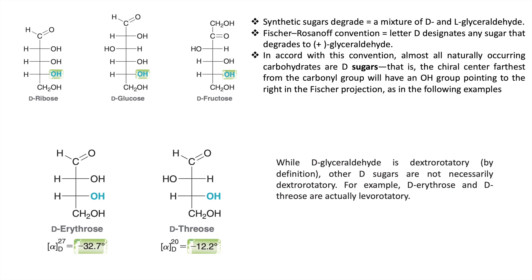D-fructose follows the same rule. Importantly, 'D' here is just a naming convention — it does not indicate the direction of rotation of plane-polarized light. For example, D-erythrose is given the D name because its hydroxyl group is on the right, but the compound actually rotates plane-polarized light anticlockwise, giving it a negative sign. Similarly, D-threose has the hydroxyl on the right-most chiral carbon matching D-glyceraldehyde, yet it also rotates plane-polarized light anticlockwise.